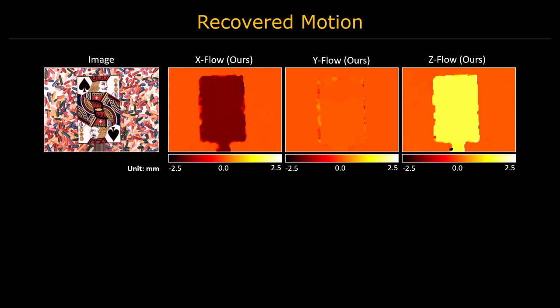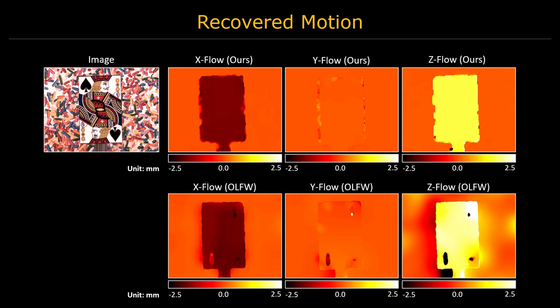We compare our method with a state-of-the-art scene flow method that estimates Z motion by explicitly computing depth. Notice that the two methods perform similarly well for X and Y motion. The existing method cannot recover the Z motion accurately because the errors in depth estimation are large compared to the millimeter scale motion along Z. The proposed ray flow method estimates the Z motion directly, thereby achieving higher accuracy.